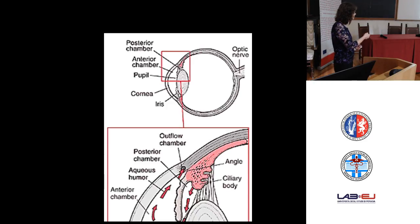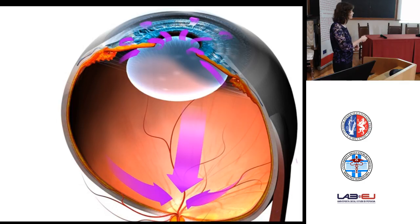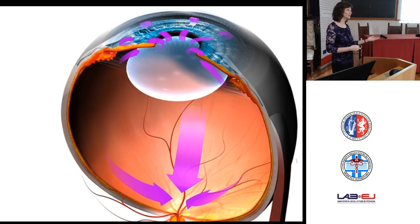Increased intraocular pressure can lead to focal breaks in Descemet's membrane — the Haab's striae we see in this horse — where fluid leaks into the corneal stroma. So the big question is primary versus secondary glaucoma. What I find helpful is to trace back the pigmented layer forming the anteriormost aspect of the iris and see if it extends over to the end of Descemet's membrane together with the rest of the stroma. That is basically what I use as a criterion to make the diagnosis of goniodysgenesis or pectinate ligament dysplasia.